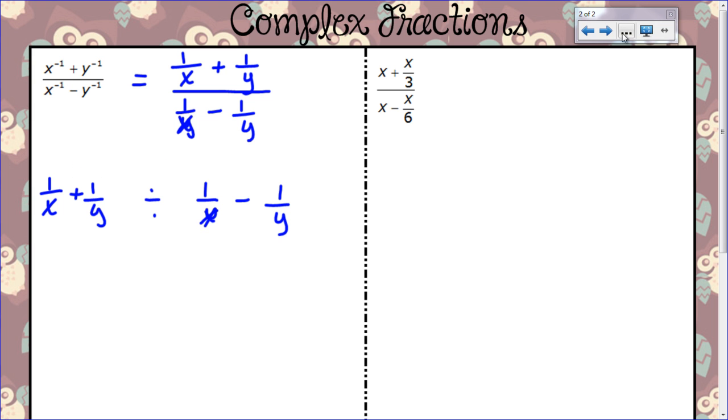So this needs a common denominator. And if I look at the denominators that I have, I have an x and a y, which means I need an x and a y in both of them. So I'm going to multiply this one by y and this one by x. So I end up with y over xy plus x over xy. Then I have my divided by. Now this one, I have an x and a y again, so I'm going to have to have xy in both. So I'm going to multiply this one by y and this one by x. And so then I have y over xy minus x, that should be an x there, over xy.